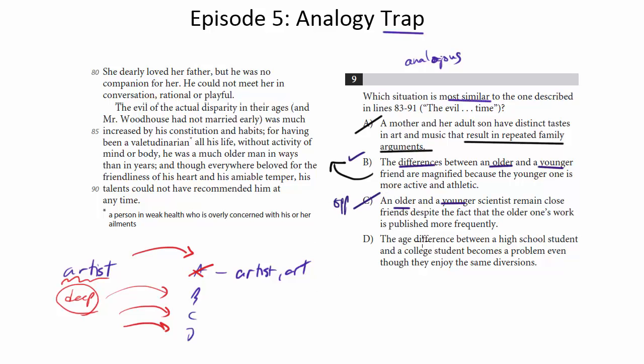The age difference between a high school student and a college student becomes a problem even though they enjoy the same diversions. So a couple problems here. The age difference between these two is not great enough. We're talking about a huge difference as described here between the father and the daughter. High school versus college is just not that much of a difference. So it doesn't map very closely. Second, it becomes a problem even though they enjoy the same diversions. It doesn't really even say that they enjoy the same kinds of things. In fact, just the opposite. He can't meet her in conversation.